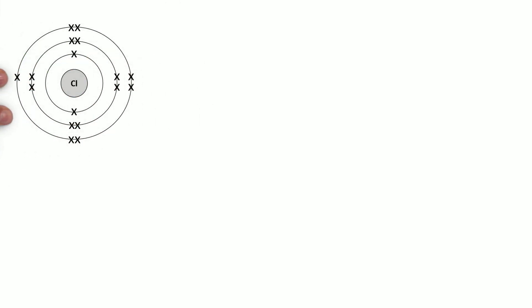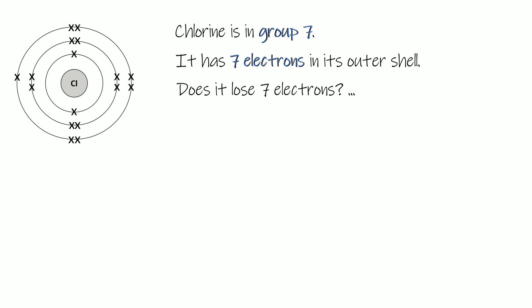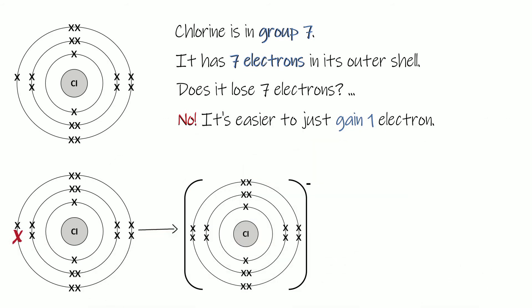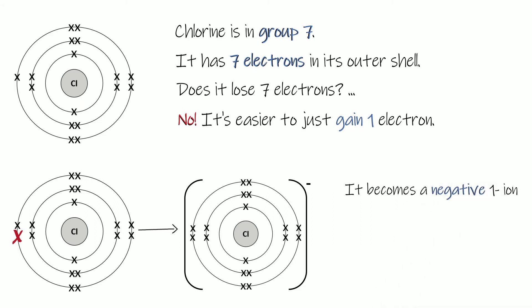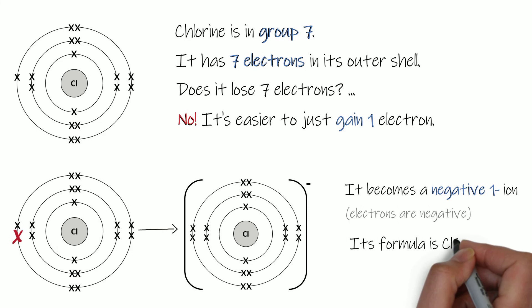Now let's think about non-metals. Take chlorine as an example — chlorine is in group seven and has seven electrons in its outer shell. It wants a full outer shell, but is it going to lose all seven? No — it's much easier for chlorine to just gain one extra electron to have a full outer shell. So whereas metals lose electrons, non-metals tend to gain electrons. Chlorine gains an extra electron and forms a negative ion — because it's gained one negative electron it forms a 1− ion, so the formula is Cl⁻.